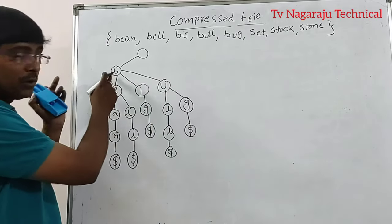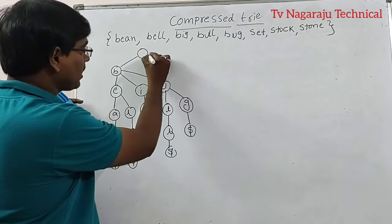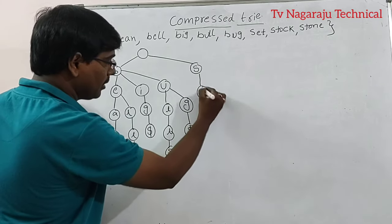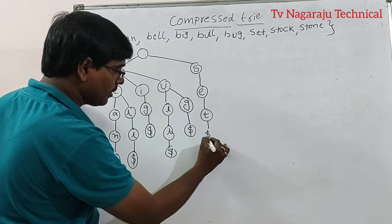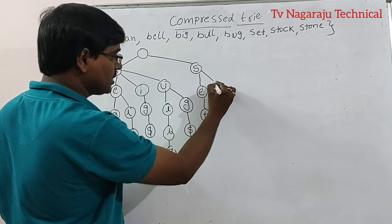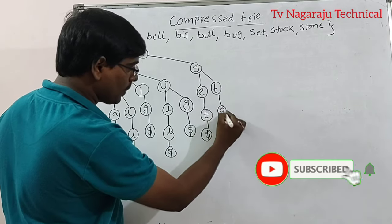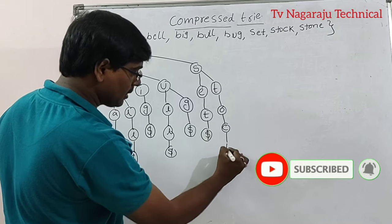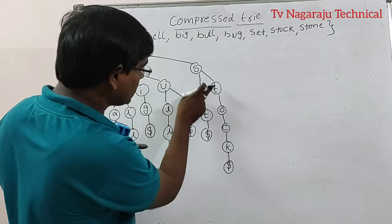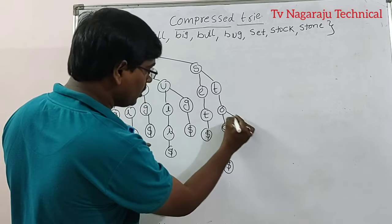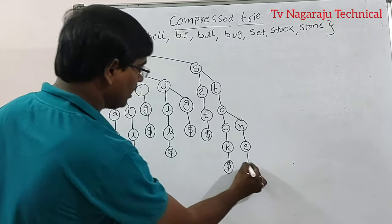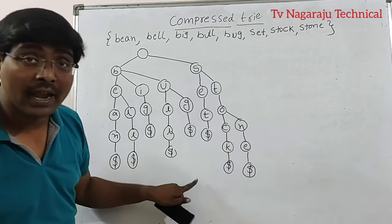Now set: starting from the root, B is already there so take another branch — S, E, T, followed by dollar. Then stock: S, T, O, C, K with dollar. Then stone: S, T, O is already available up to O, so we expand with N, E, dollar. This is called the standard trie.